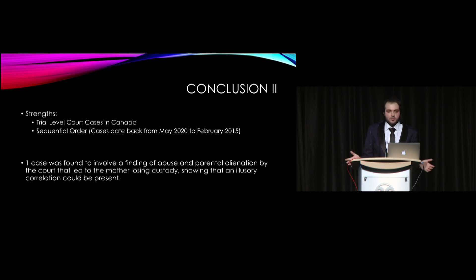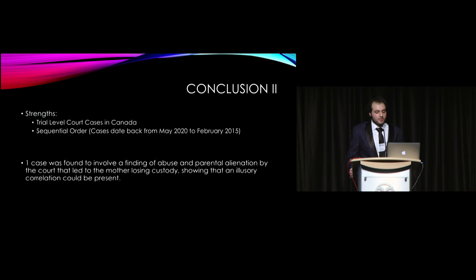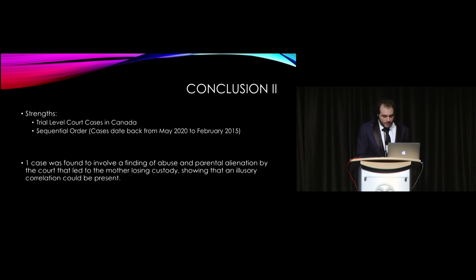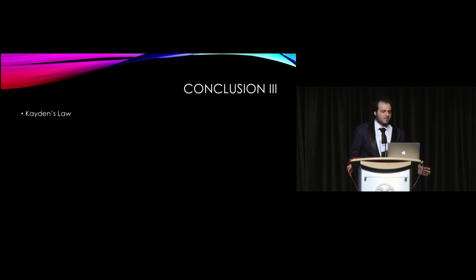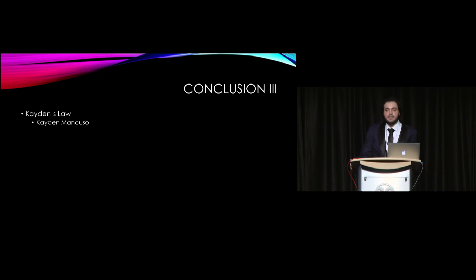The ultimate finding — that only one case involving both an alienation and abuse finding led to the mother losing custody — illustrates how an illusory correlation may be present here: people might take this one case where it did happen and extrapolate that it happens all the time. These types of studies are having an impact on public policy, including Caden's Law, which I believe is a law in Pennsylvania, Illinois, and New York.